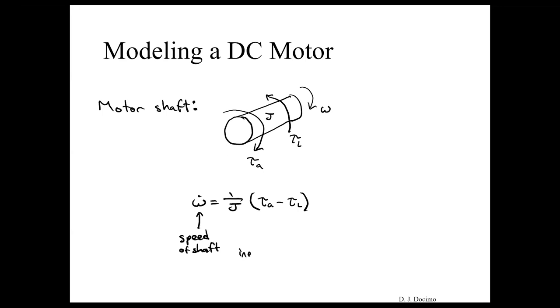This is our shaft inertia J, TA is our torque from our armature circuit, and TL is our load torque, which can represent a variety of different things.